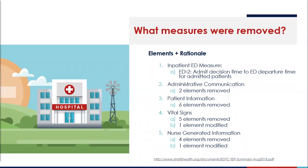Number three is patient information. There were six elements that were actually removed, which included name, address, age, gender, and the significant others' contact information as well as insurance. That was removed because communication of this was regularly occurring and documentation of the measure was not value-added.